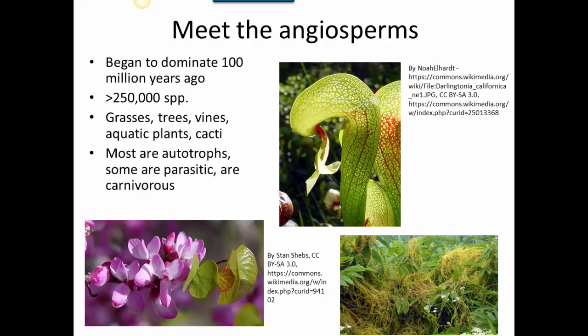There are also some carnivorous plants, including our local Darlingtonia californica, the California pitcher plant. This plant makes a living by making sugars through photosynthesis, so it is autotrophic, but it supplements its nutrients by digesting the bodies of insects and other invertebrates. So angiosperms are a relatively recent, extremely diverse group, not only in species but also in form and ecology.